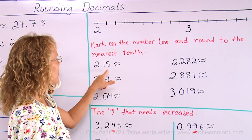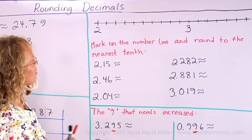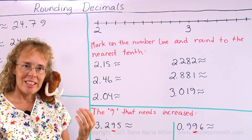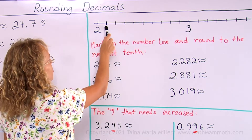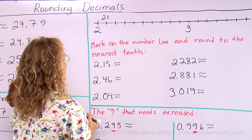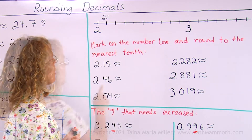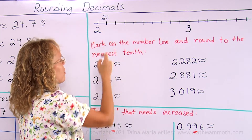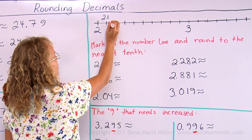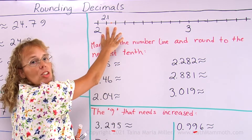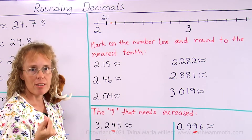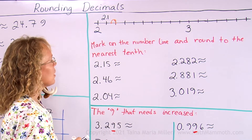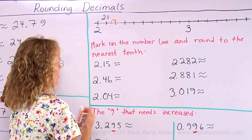2.15. Let's look at the number line first — it only has 2 and 3. Between 2 and 3, the number line is divided into 10 parts, so those parts are tenths. This would be 2 and 1 tenths, next tick mark is 2 and 2 tenths, and so on. 2.15 is 2 and 1 tenths and 5 hundredths, so I go to 2 and 1 tenths and a little bit further. 5 means it's exactly the midpoint — it rounds up. So we get 2 and 2 tenths.